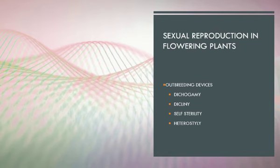Next one is dicliny. Dicliny means unisexuality. Flowers are unisexual so that self-pollination is not possible. Plant may be monoecious bearing both male and female flowers, just like castor and maize.